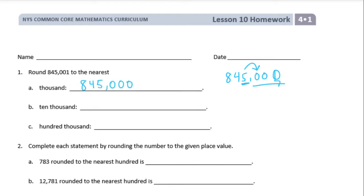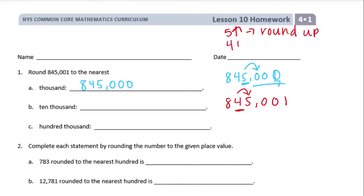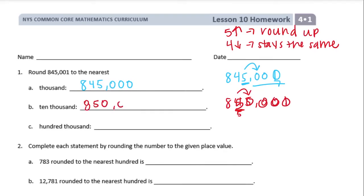Now rounding to the ten thousands place: the four is in the ten thousands place. Next to it is a five. That five is five or higher, which means we round up — five or higher, round up; four or lower, stays the same. So the four rounds up to a five, and everything else becomes zeros, which is 850,000.